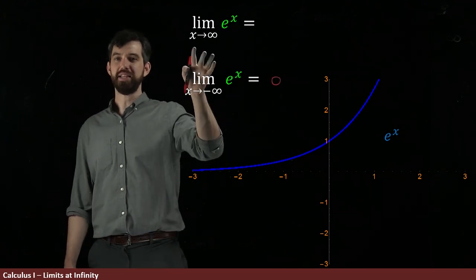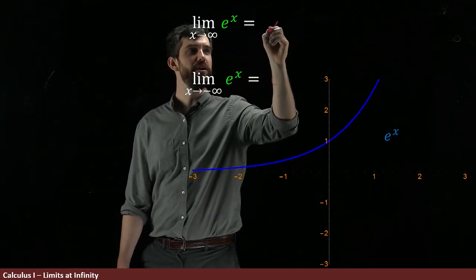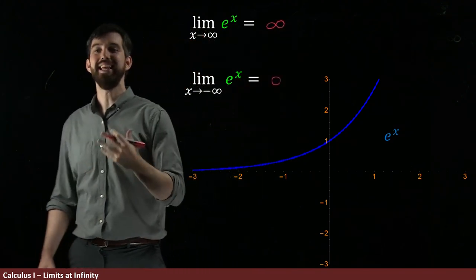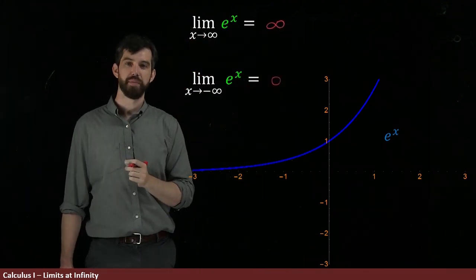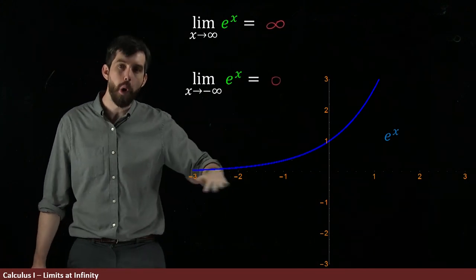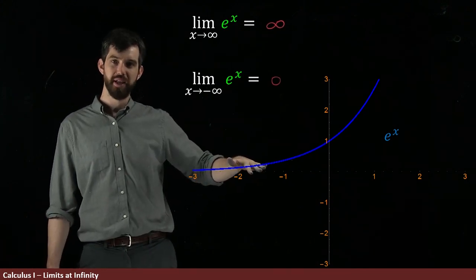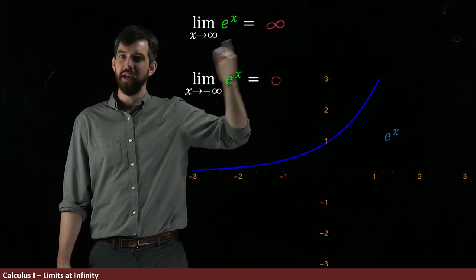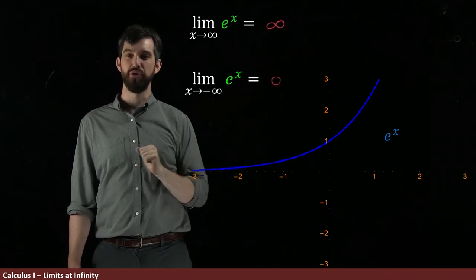So we're going to say the limit as x goes to infinity of e to the x is just going to be equal to infinity. It is unbounded. And so for functions like this, you have this sort of interesting behavior. There is one horizontal asymptote and one where, as the x goes to infinity, it diverges to infinity.